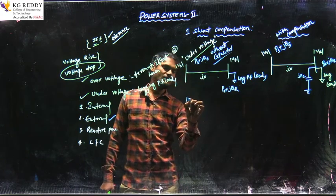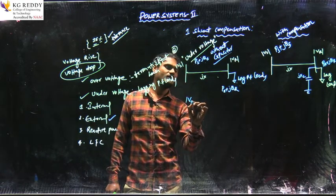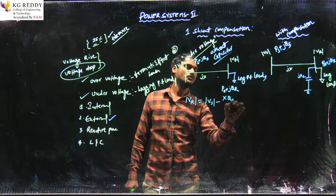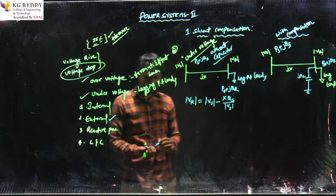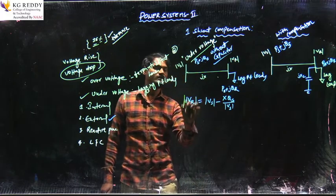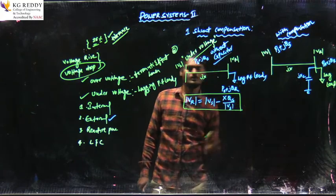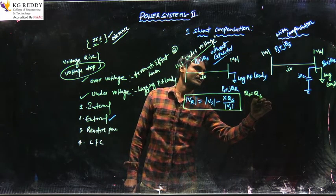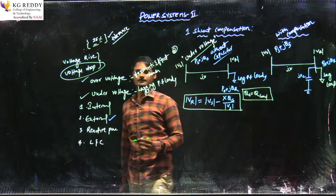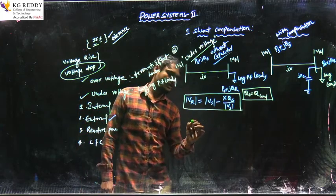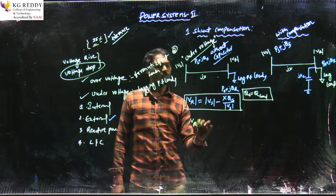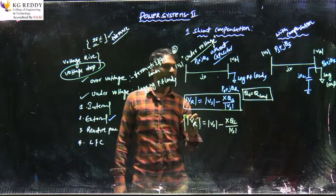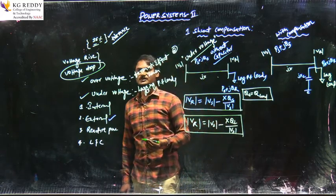We need to write an equation relating the receiving end and sending end voltages. The relation is: Vr = Vs − (X·Qs)/Vs. From the diagram, the reactive power at the sending end equals the reactive power at the load. Substituting, we get: Vr = Vs − (X·Ql)/Vs. This equation represents the transmission line without compensation.